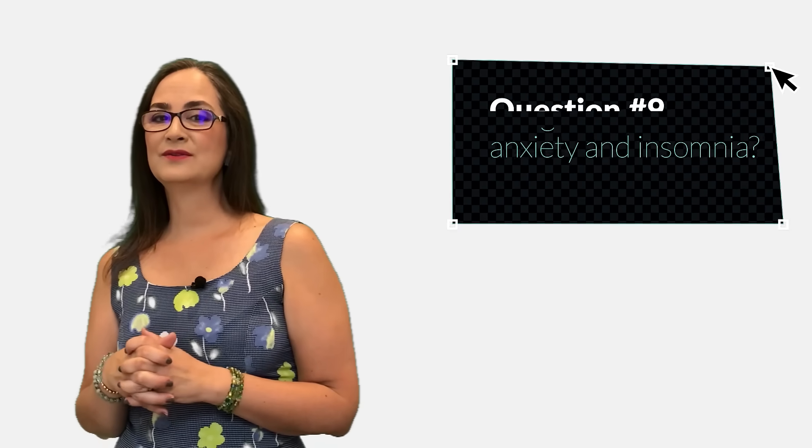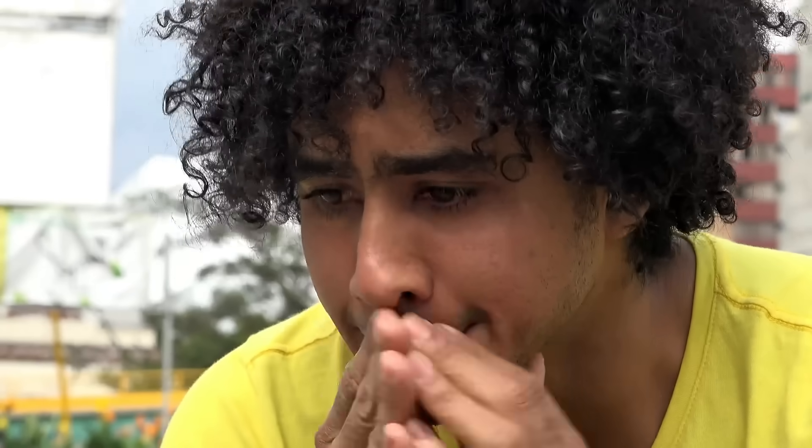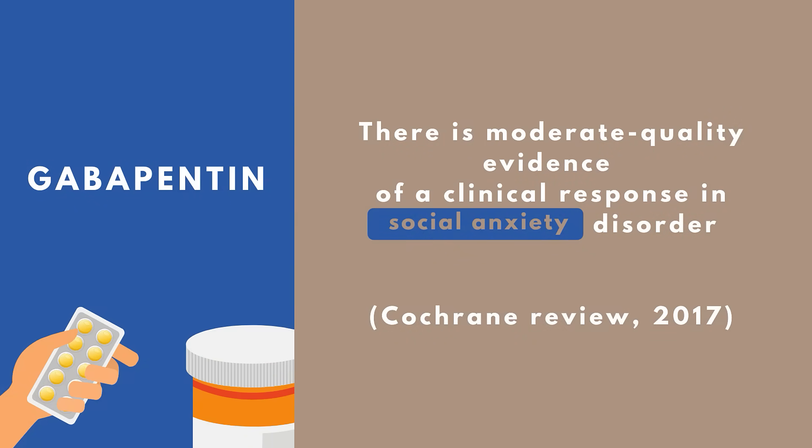Question number 9: Is gabapentin good for anxiety and insomnia? As I mentioned, gabapentin is used for a variety of conditions, but it is not a panacea — a solution for all diseases. Many patients with chronic pain also complain of anxiety and insomnia. Anxiety is an unwarranted or excessive fear, especially about vague or unknown situations. I could not find strong evidence for gabapentin treating general anxiety — there is a Cochrane review showing moderate quality evidence of a clinical response in social anxiety disorder, but this is not the same as generalized anxiety. I also did not find evidence to support the use of gabapentin for insomnia. Perhaps people use it for insomnia only because one of the most common side effects of gabapentin is sleepiness.